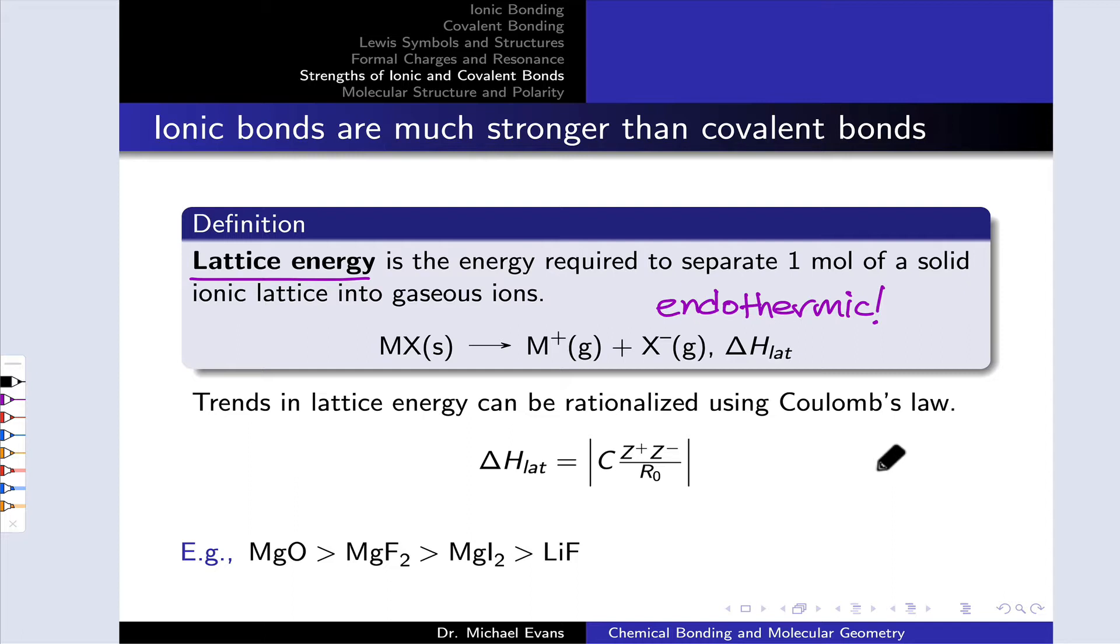What we'd like to be able to do is roughly predict the relative lattice energies of two or more ionic compounds, and we can do this using the idea that lattice energy is roughly governed by Coulomb's law. Coulomb's law reflects the force of attraction between charged particles, and that's what's happening inside an ionic bond.